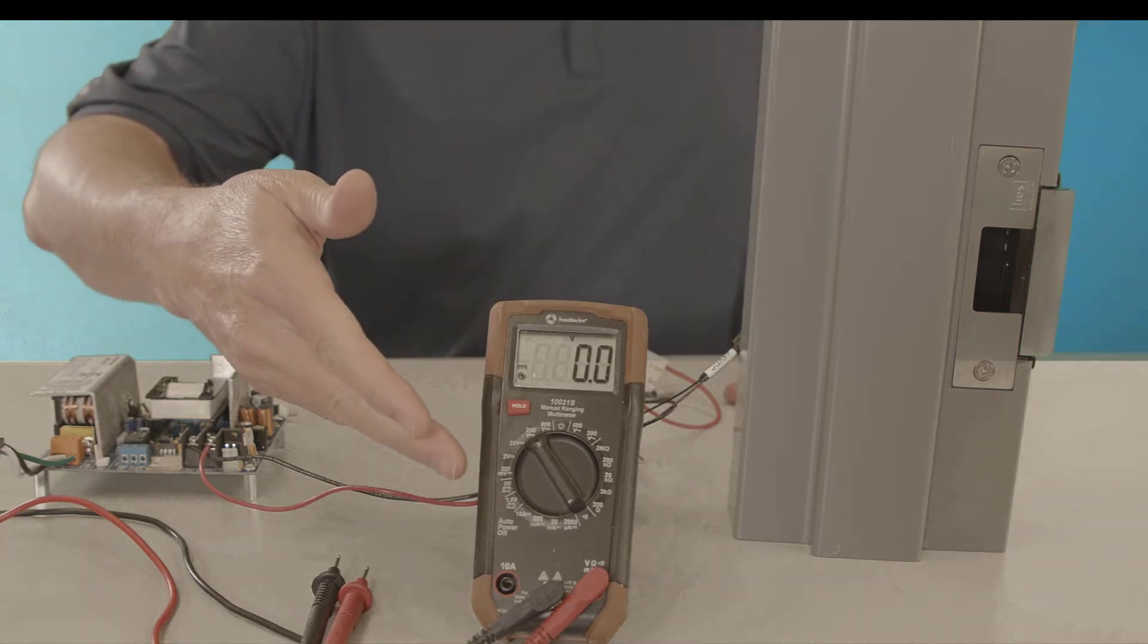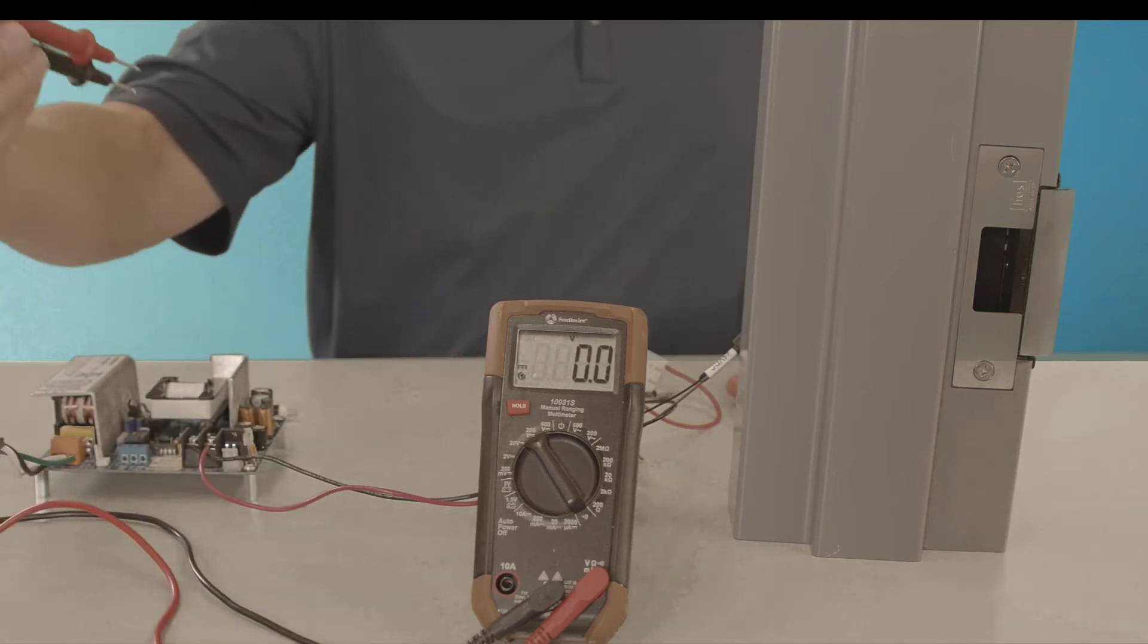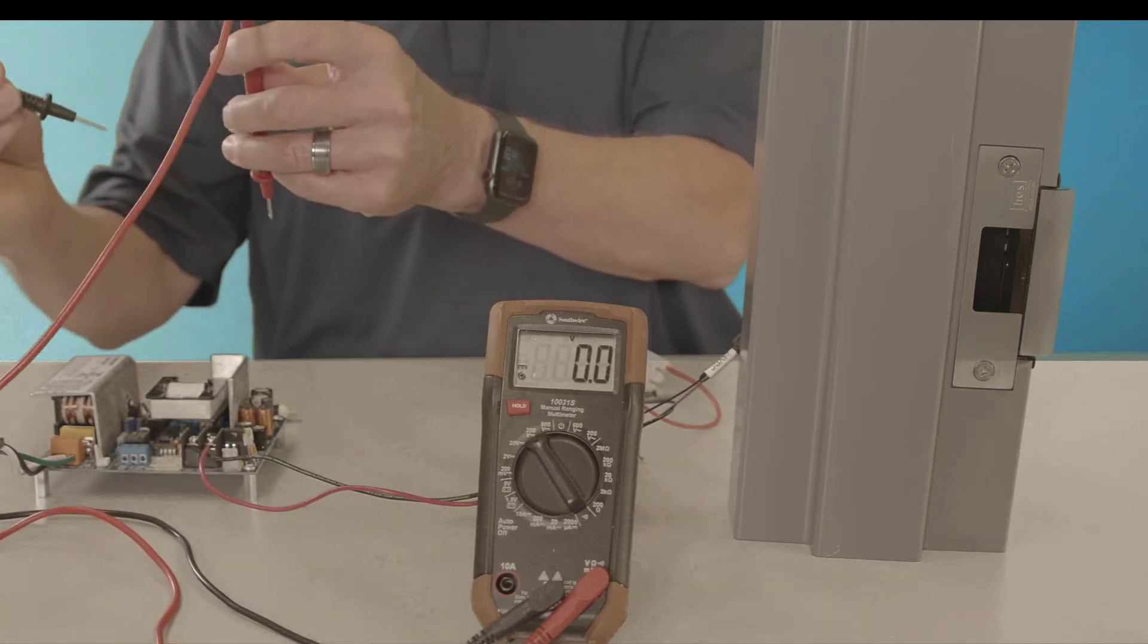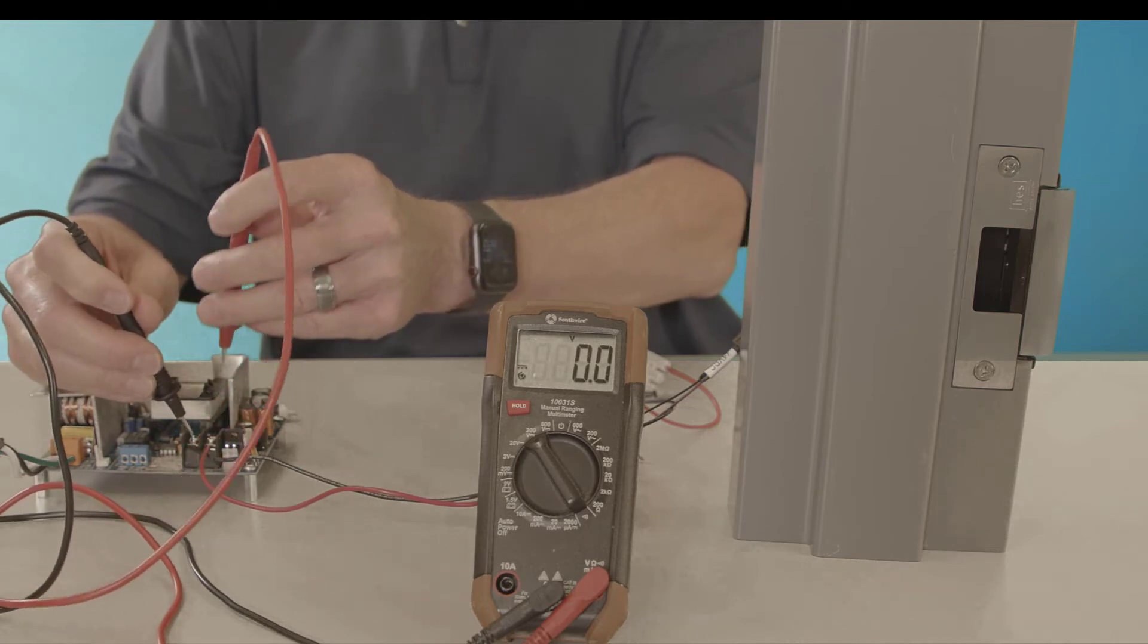I've got my multimeter set up to 200 volt DC. I'm going to use my cords. I'm going to go right to my power source, and I want to see at my power source what voltage I have going into my circuit.